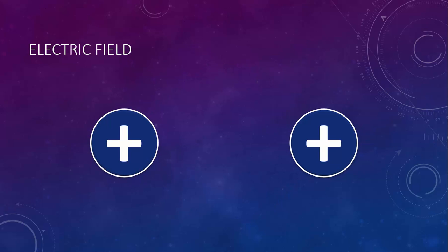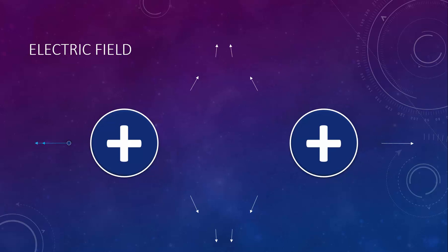What if we had two positive objects? Well, right in the middle, the positive test charge would feel a repulsion in both directions and they would be the same magnitude, so they would cancel each other out. There's essentially no electric field right there in the middle, but at any other place there will be a net force. We could look at many more points, but this is enough to get the basic idea of this electric field.